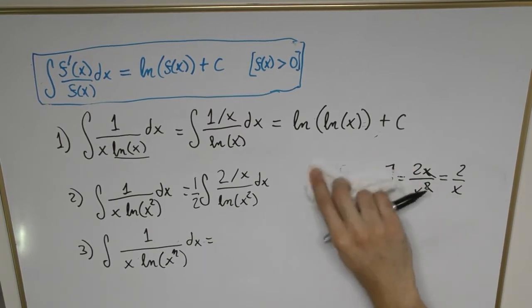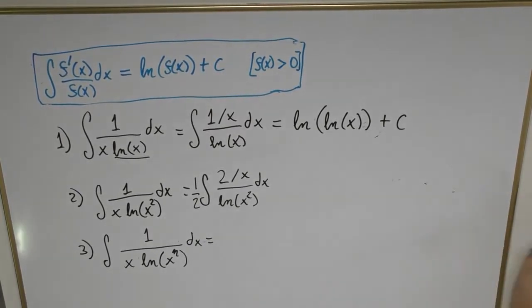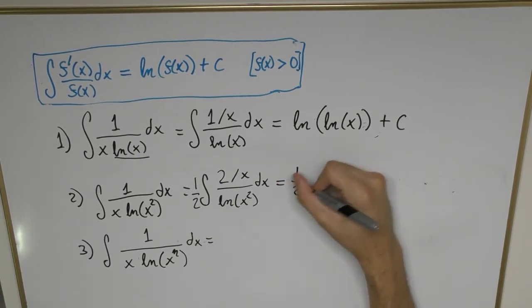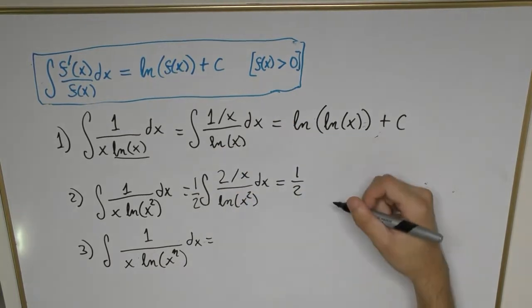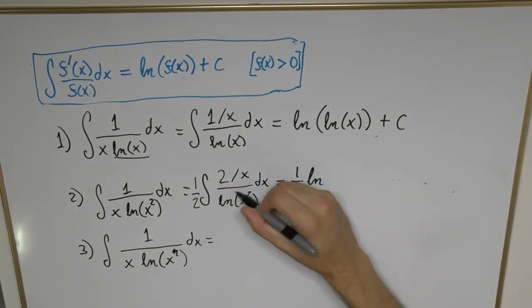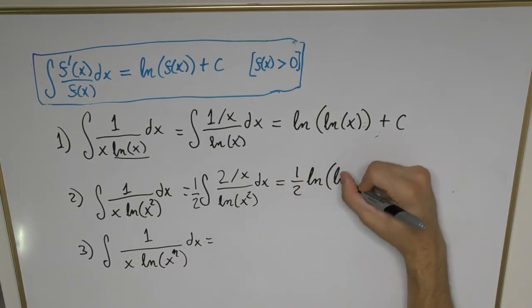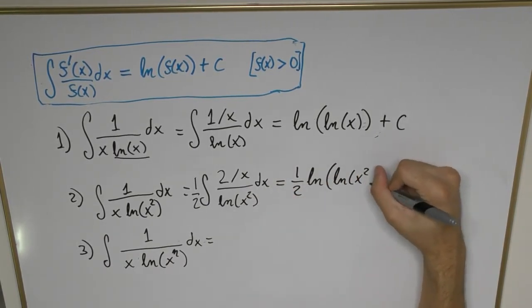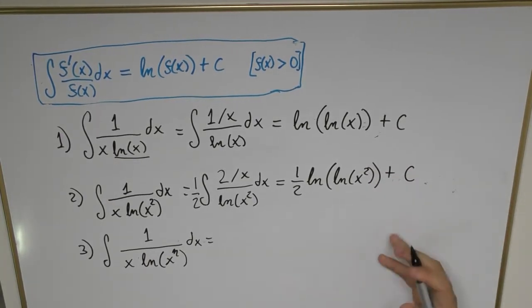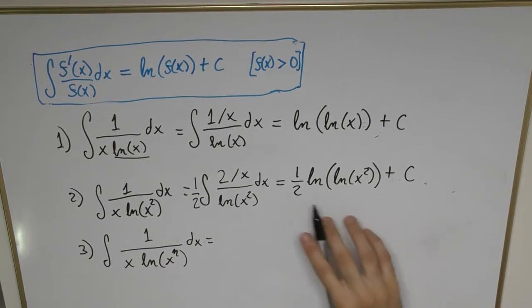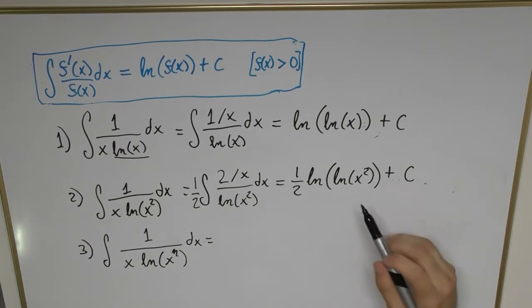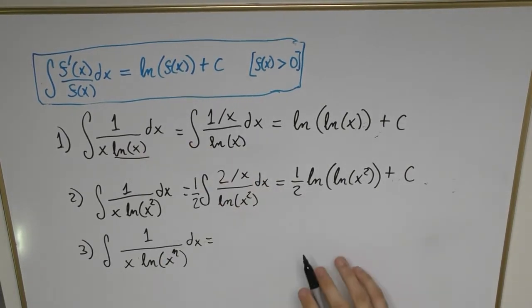Now we can integrate whatever is inside the integral operator. This is going to result in (1/2) times the natural log of the denominator, which is ln(ln(x²)) + C. And we can of course check that this is indeed the answer simply by differentiating this function, which will require us to apply the chain rule twice, and we would see that we get back to the original expression.